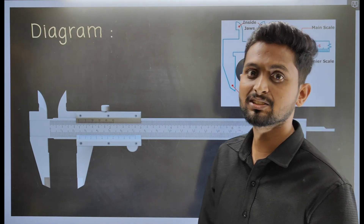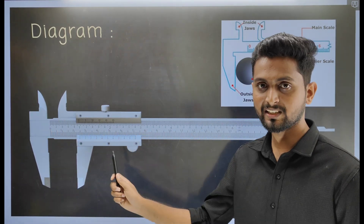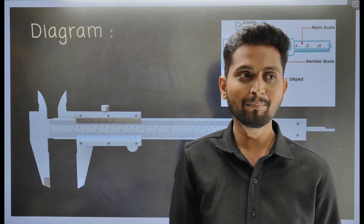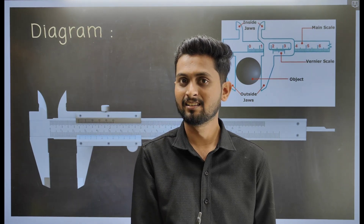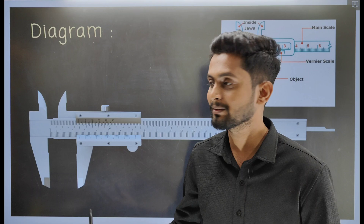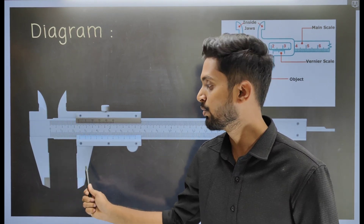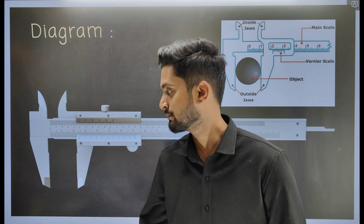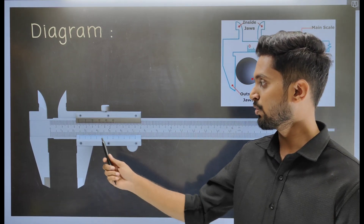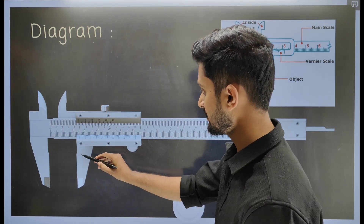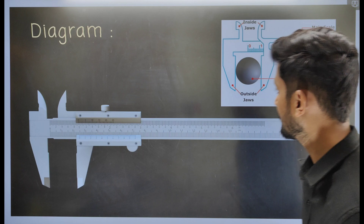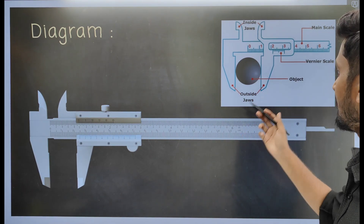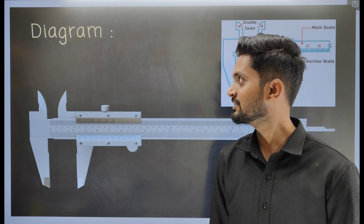Looking at the diagram, the two upper jaws are used to measure the internal diameter — for example, the internal diameter of a beaker. For this experiment, however, we are not using the upper jaws; we are using the lower jaws, because the lower jaws measure the external diameter. The vernier scale is the movable scale, and the main scale is fixed. The spherical body is placed between the lower jaws.